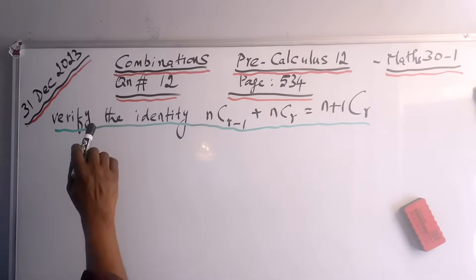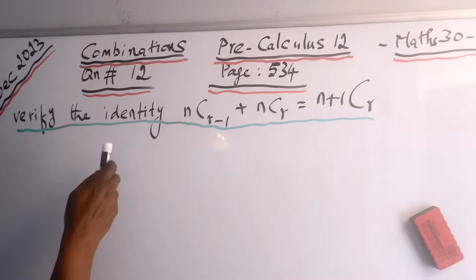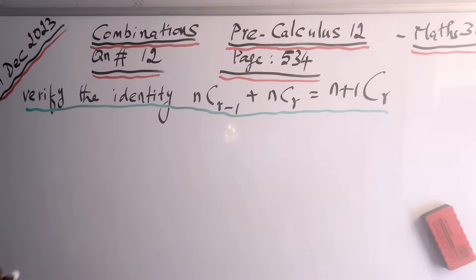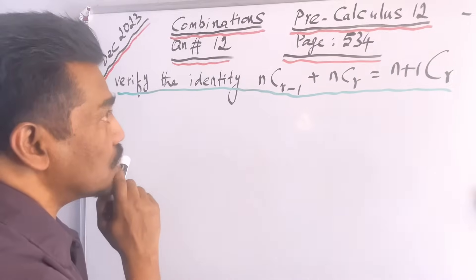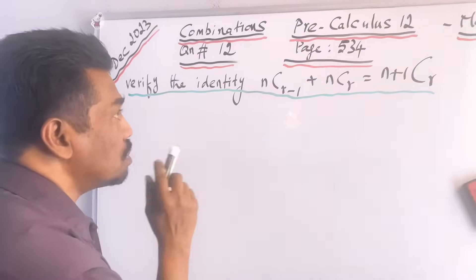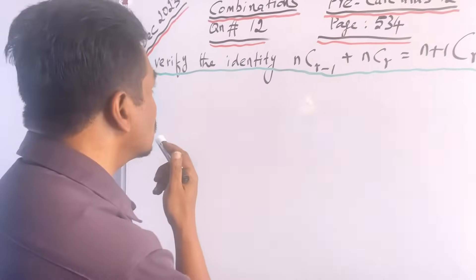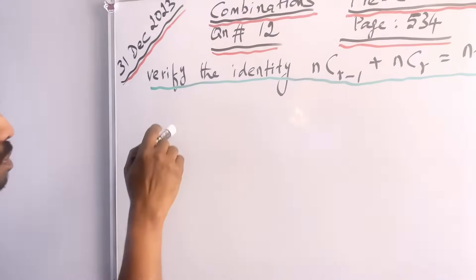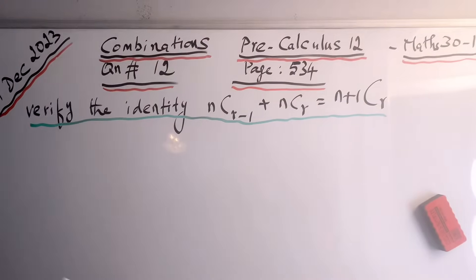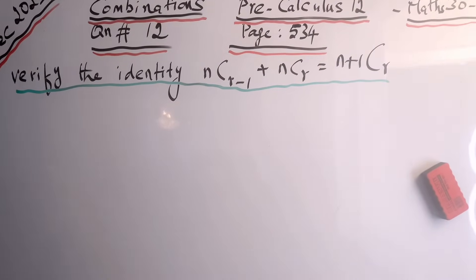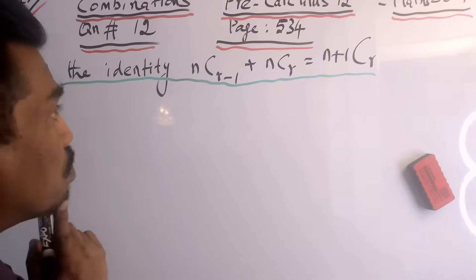This question is taken from the chapter Permutations and Combinations, more specifically from Combinations. It's from Pre-Calculus 12, page number 534. In the Alberta curriculum it comes under the Math 30-1 course. The question is: verify the identity nC(r-1) + nCr = (n+1)Cr.